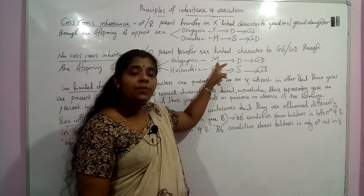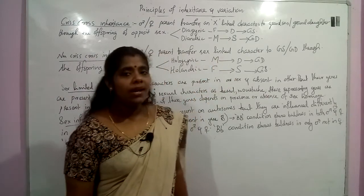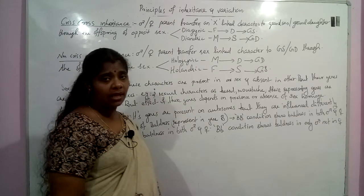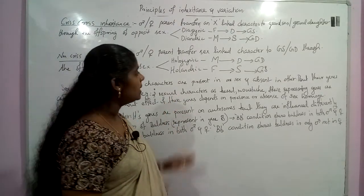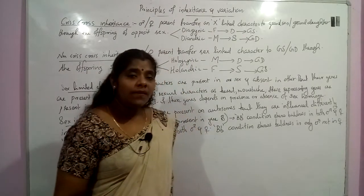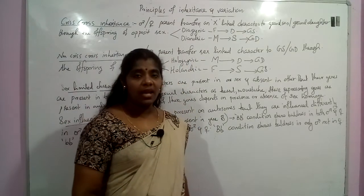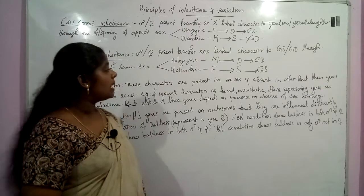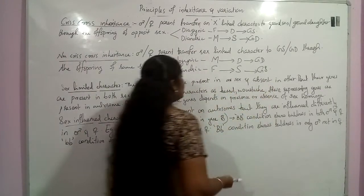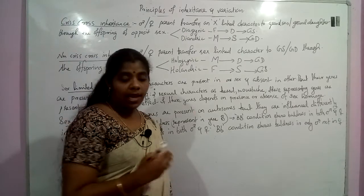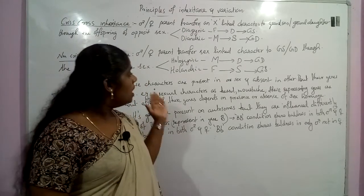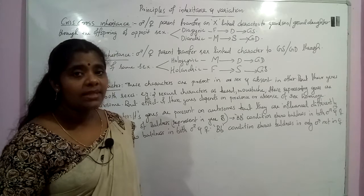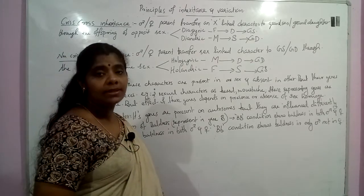In hologynic Non-Criss-Cross inheritance, the character passes from mother to daughter to granddaughter. In holoandric Non-Criss-Cross inheritance, the father passes the sex chromosomal character to the son, and through the son it reaches to the grandson — father to son to grandson. The character present on the X-chromosome passes through all male progenies; that is called holoandric type of Non-Criss-Cross inheritance.